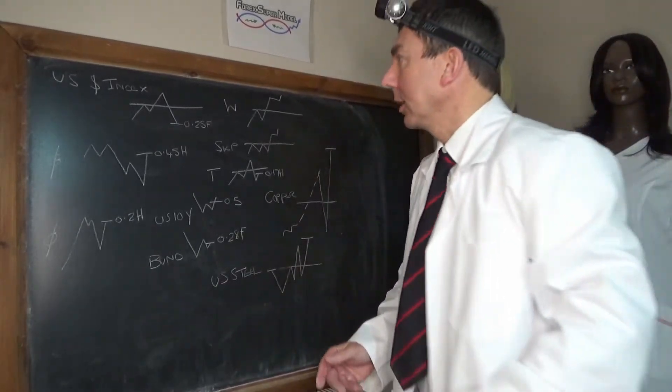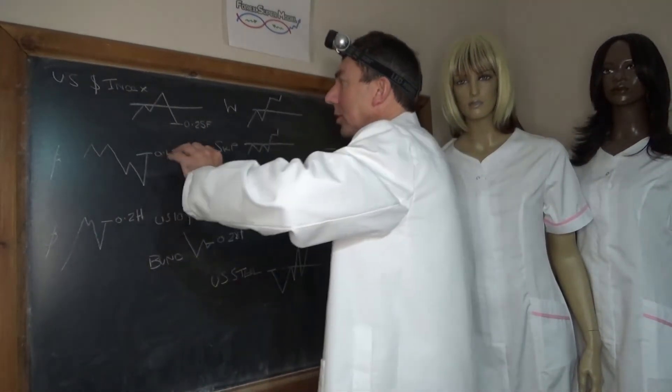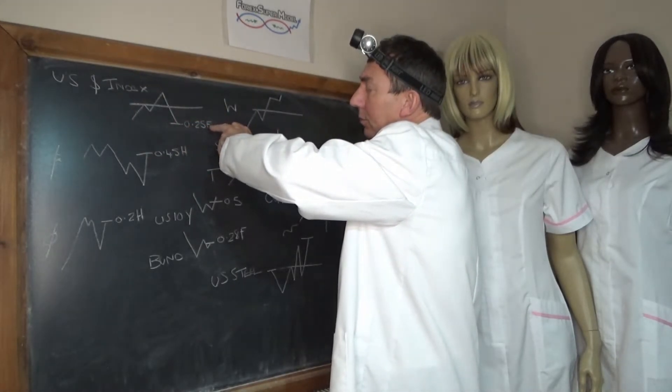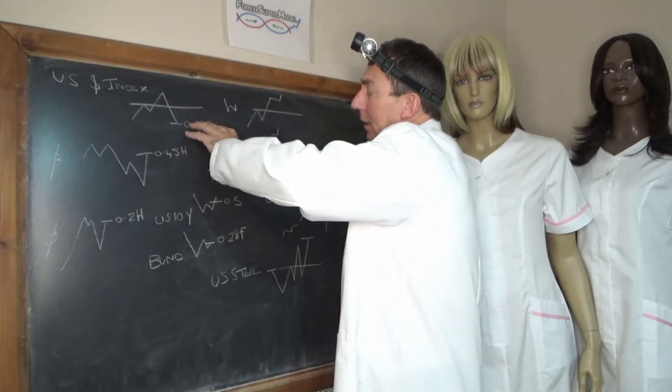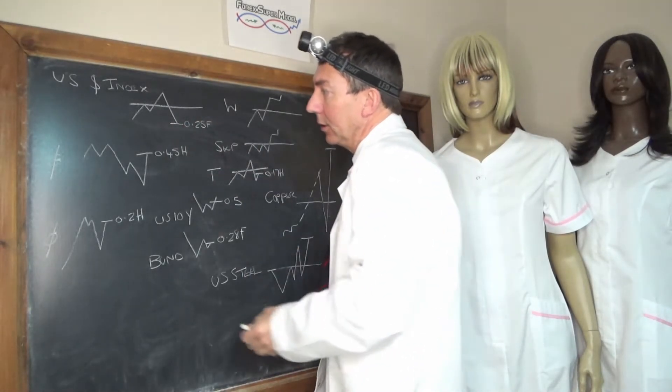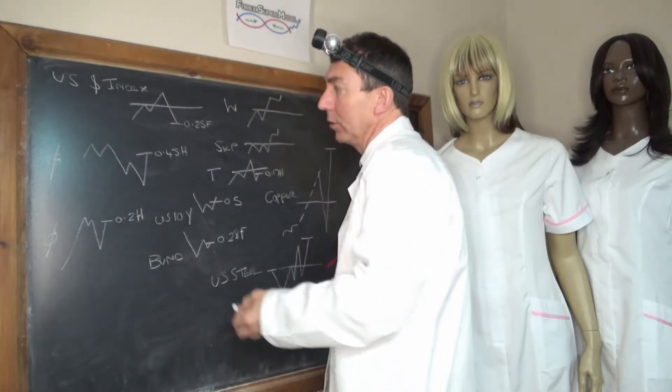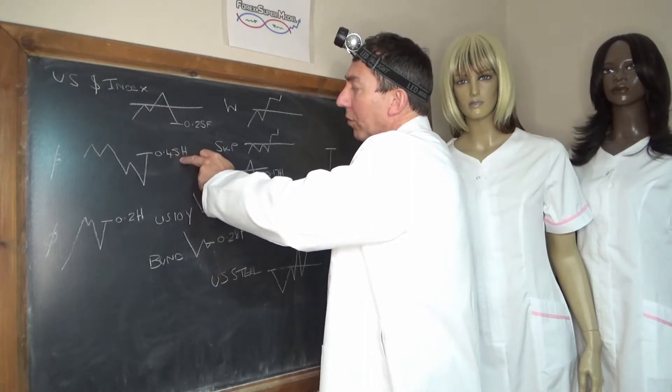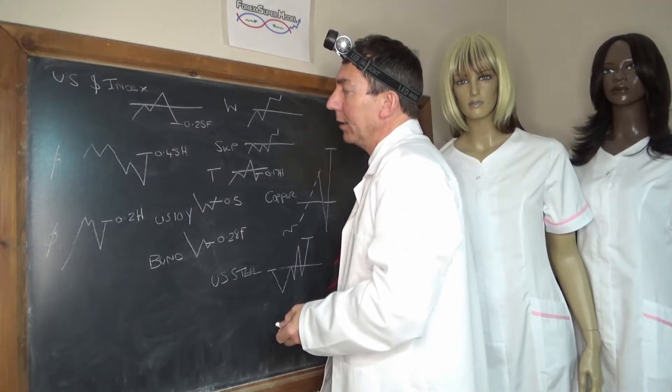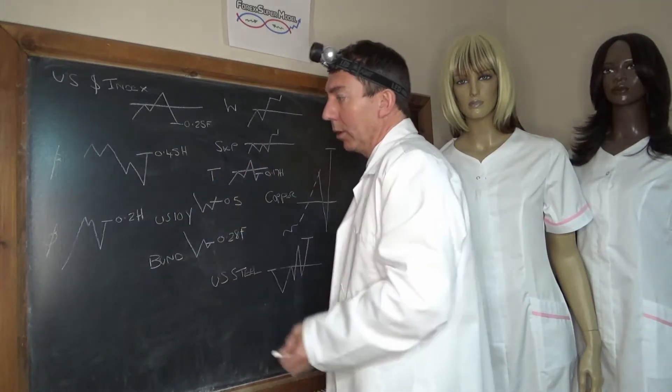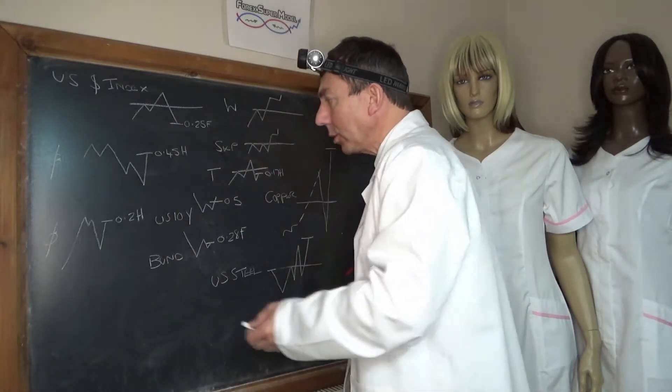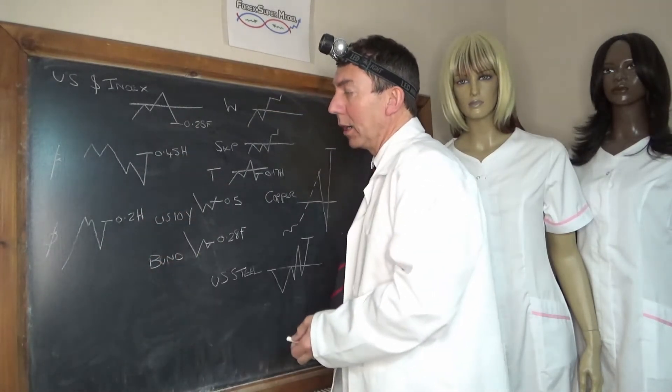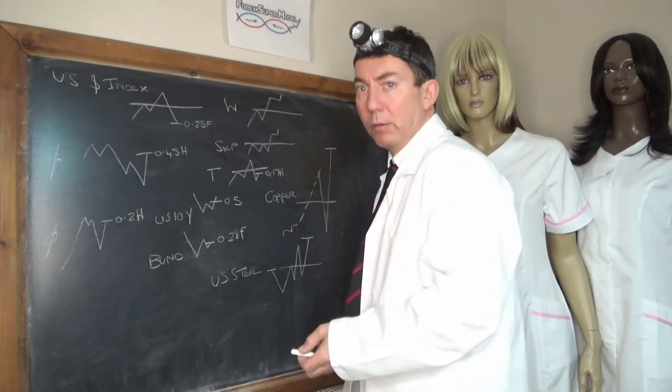Let's look at the asset classes. The US dollar index is down at 0.25 from the floor, we've got weakness in the dollar. Gold normally likes a weaker dollar and it's come up a little bit, it's now at 0.45 from the high, so it's 0.55 from the floor, it's over halfway recovered. Oil is struggling a bit but it is strong at 0.2 from the high, it just needs to break that pre-OPEC high.